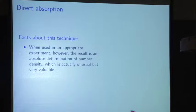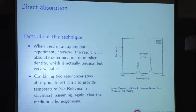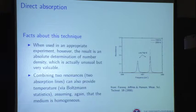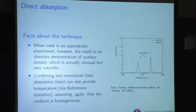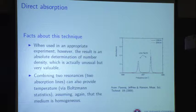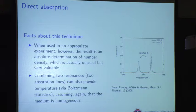If you use it in an appropriate experiment, it's an absolute determination of number density — that's unusual and extremely valuable. If you combine two resonances using Boltzmann statistics, you can get the temperature. Here's an example from Stanford showing absorption versus frequency for two different lines and how they change with temperature — that gives a nicely resolved measurement of temperature from the populations of the two lines.